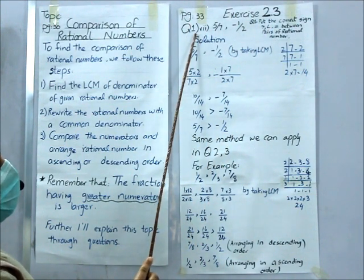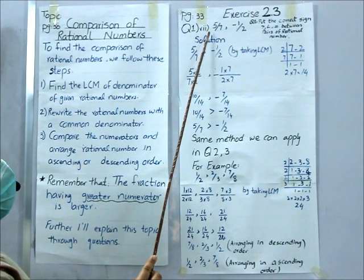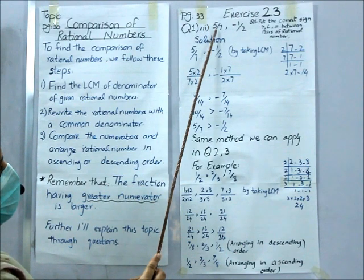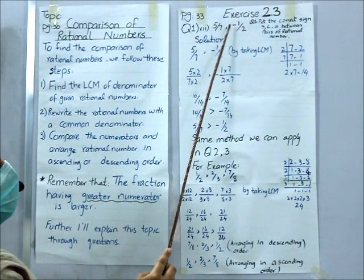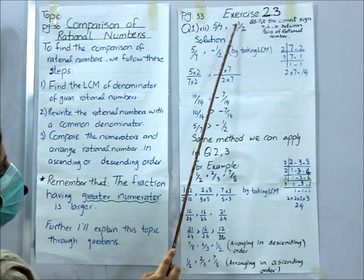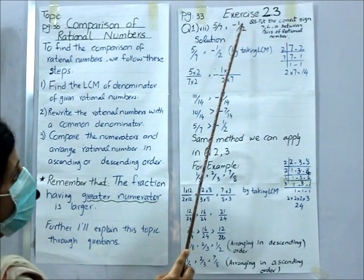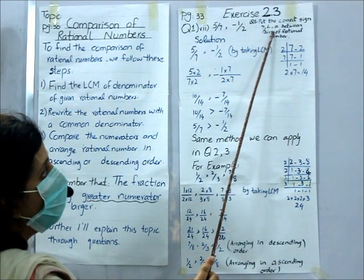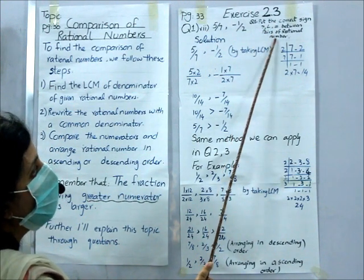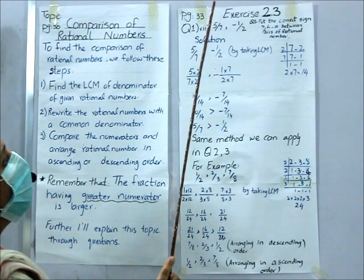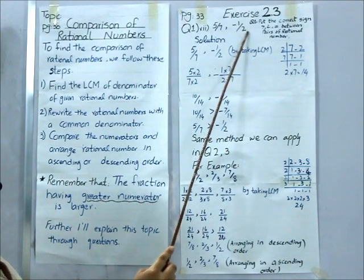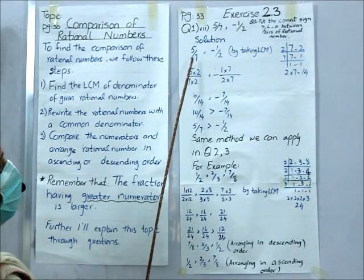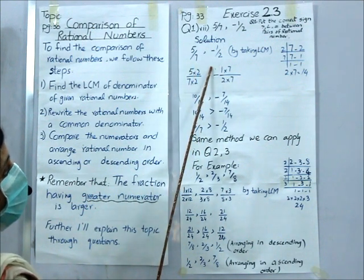There are 12 parts and I have selected 7 parts for you. The first term is 5 by 7 and the other number is minus 1 by 2. The question is: put the correct sign — greater than, less than, or equal to — between these pairs of rational numbers. First of all, we will make their denominators equal. The denominators are 7 and 2 — they are different.